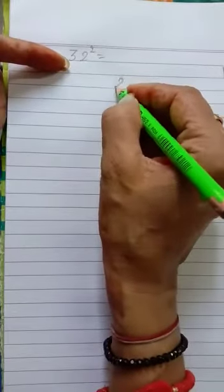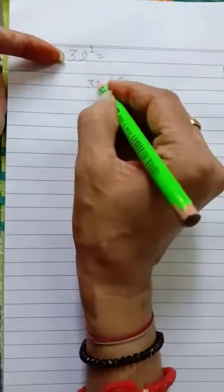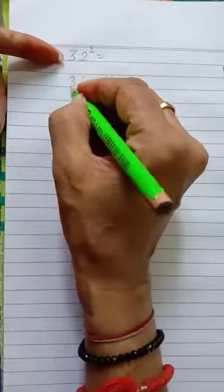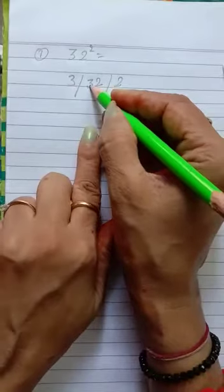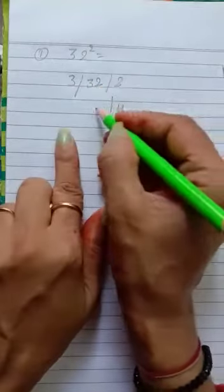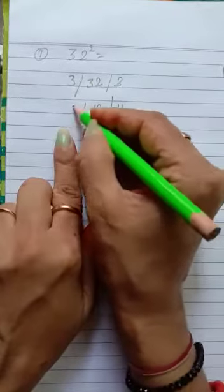So this is the formula. 32 - we have to first take separate is 2, then 32, then 3. Now we have to start: 2 times 2 is 4, then 2 times 3 is 6, and 3 times 2 is 6, 6 plus 6 is 12. Then 3 times 3 is 9.